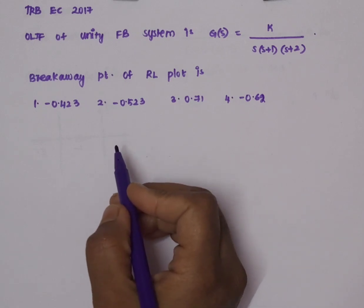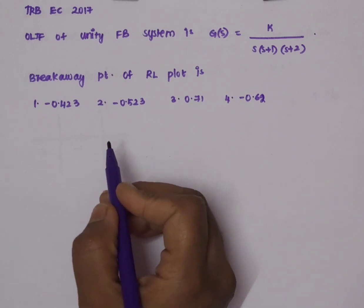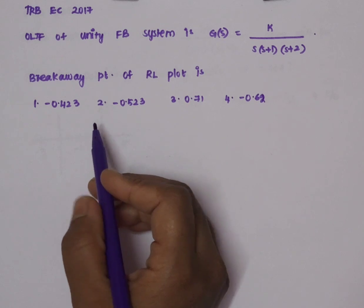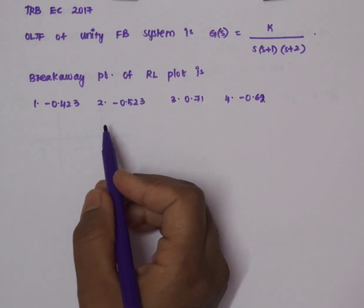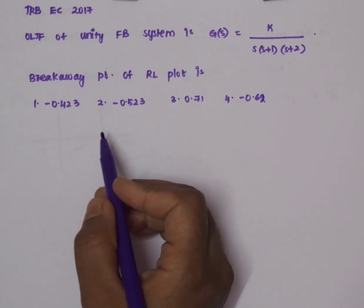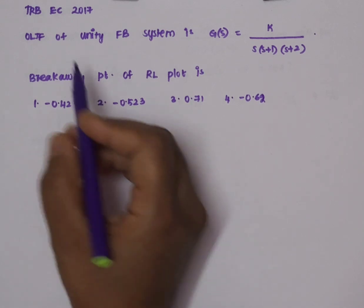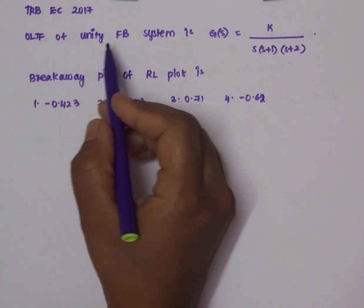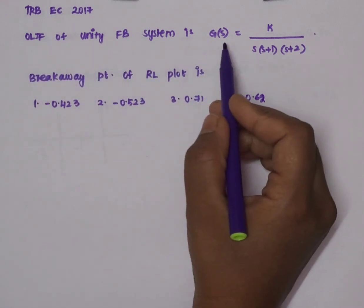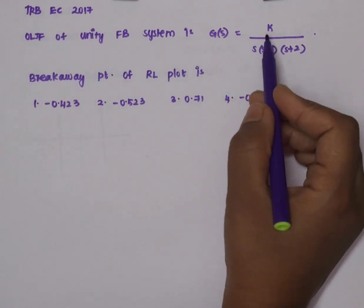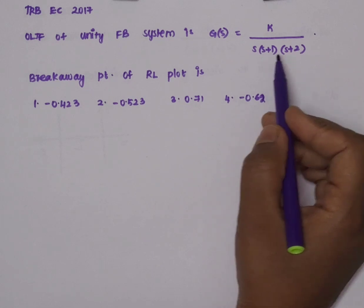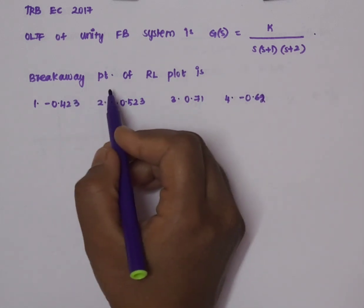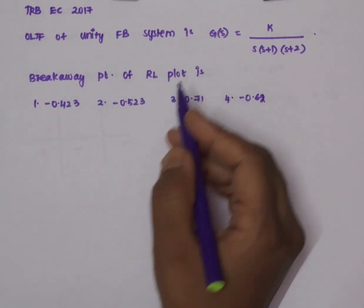Hello friends, I am coming to you in the Solve All A Minute series. We have a question from the TRBEC 2017 question paper. The question is: the open loop transfer function of a unity feedback system is G(s) = K divided by s(s+1)(s+2). Find the break away point of the root locus plot.